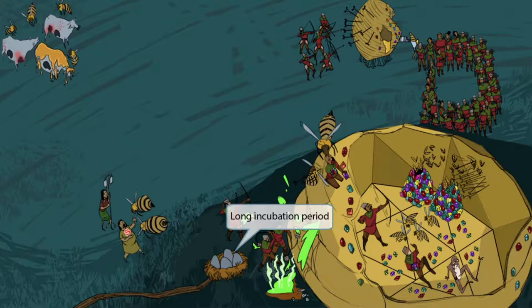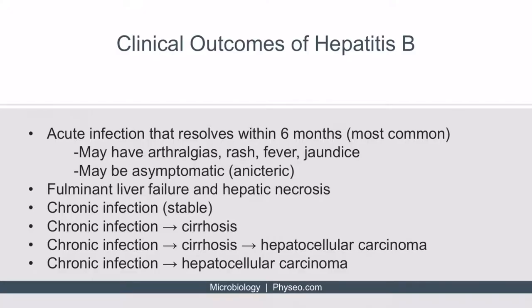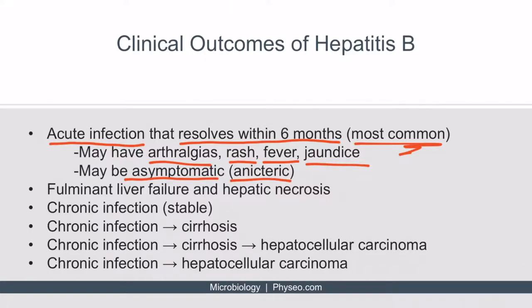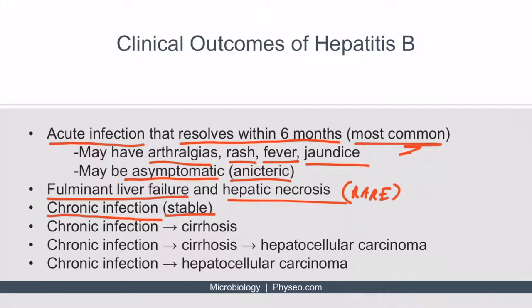Hepatitis B infections can go in a few different directions. It can be an acute infection that resolves within six months — the most common outcome. Symptoms can include arthralgias, rash, fever, and jaundice, and patients may be asymptomatic, also called anicteric, meaning no scleral icterus from the jaundice. Another outcome is fulminant liver failure and hepatic necrosis, which is extremely dangerous and thankfully pretty rare. Patients may also not recover from acute infection and instead have it proceed to a chronic infection, which can be stable and not progress to anything else. However, a chronic infection can progress to liver cirrhosis, and a patient with cirrhosis can also develop hepatocellular carcinoma.